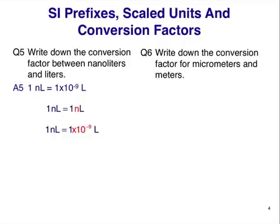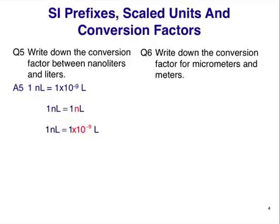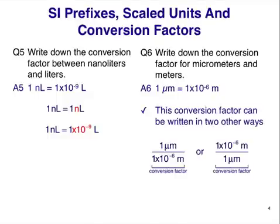Let's try another one. Write down the conversion factor for micrometers and meters. This should be straightforward by now. Pause the video here and work out your answer. Did you get 1 micrometer equals 1 times 10 to the minus 6 meters? Really, this is only one of three possible ways to write this conversion factor. It can also be written as ratios, like these. These ratios are much better to use in unit conversion calculations. Remember, a conversion factor has the same quantity numerator and denominator, just expressed in different units. Both of these conversion factors are correct as they stand, but only one of them will be useful in a particular type of unit conversion calculation.